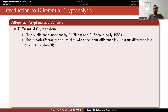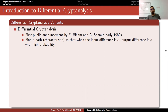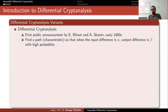Differential cryptanalysis was probably known since the Second World War — Japanese documents show they knew such techniques — but academicians announced it publicly in the early 1980s, with the first public announcement by Eli Biham and Adi Shamir. The aim is to find a characteristic or differential so that when the input difference is alpha, the output difference is beta with high probability — a distinguisher more likely for the cipher than for a random permutation. When recovering keys, that distinguisher holds with high probability for the correct key and acts as a random permutation for wrong keys.